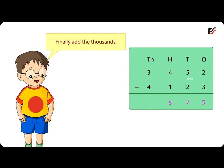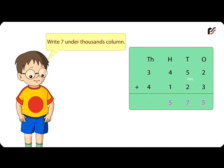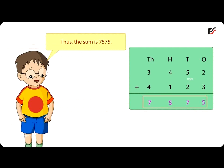Finally add 1000's. 3 plus 4 is equal to 7. Write 7 under 1000's column. Thus, the sum is 7,575.